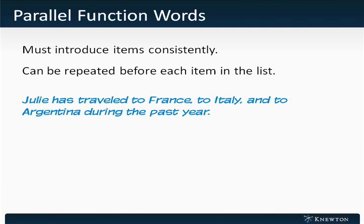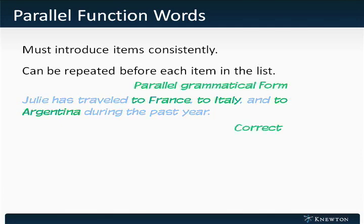For instance: Julie has traveled to France, to Italy, and to Argentina during the past year. The function word — in this case the preposition "to" — is repeated before every item in the list.